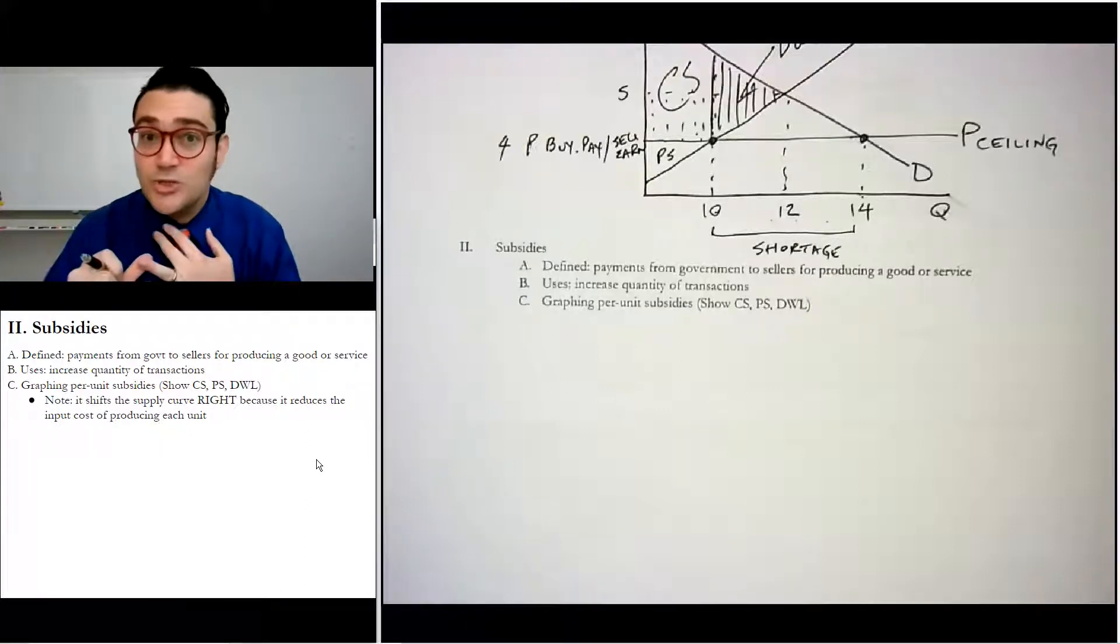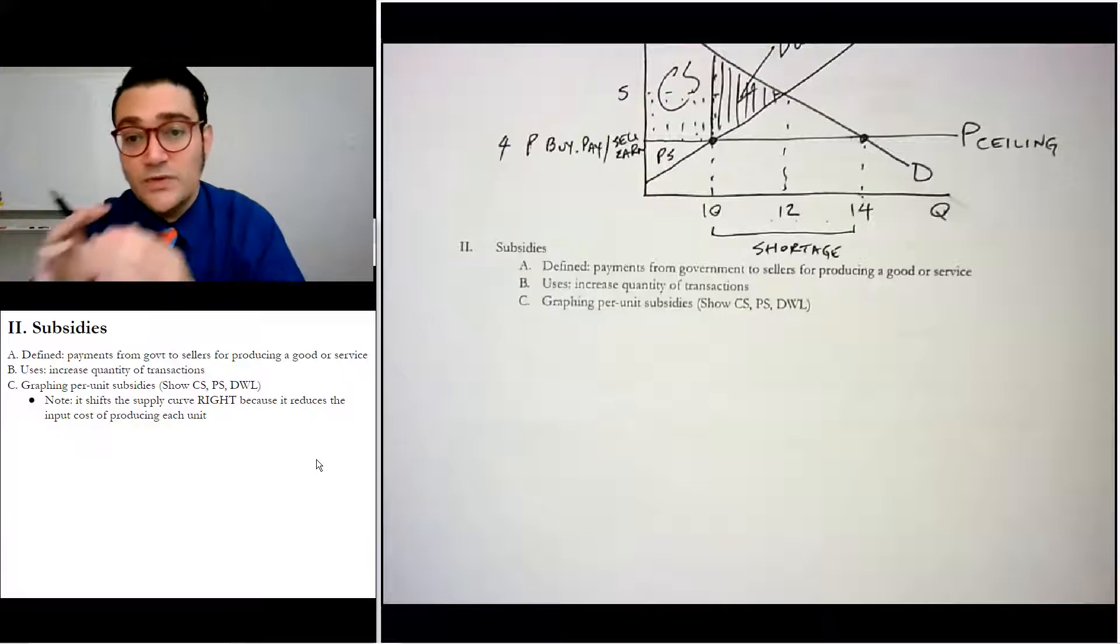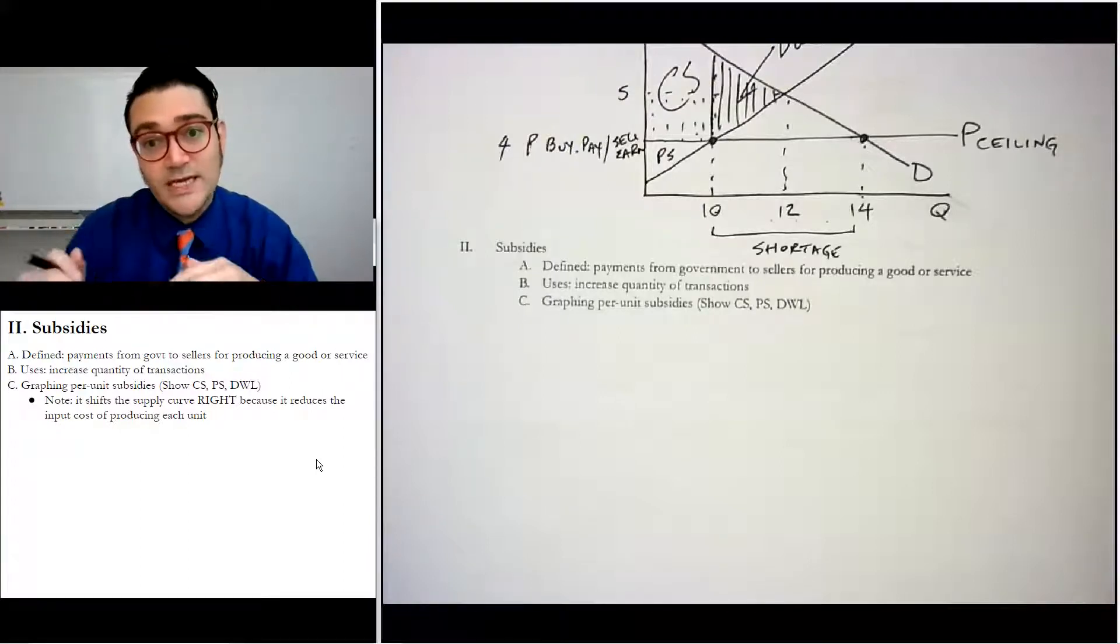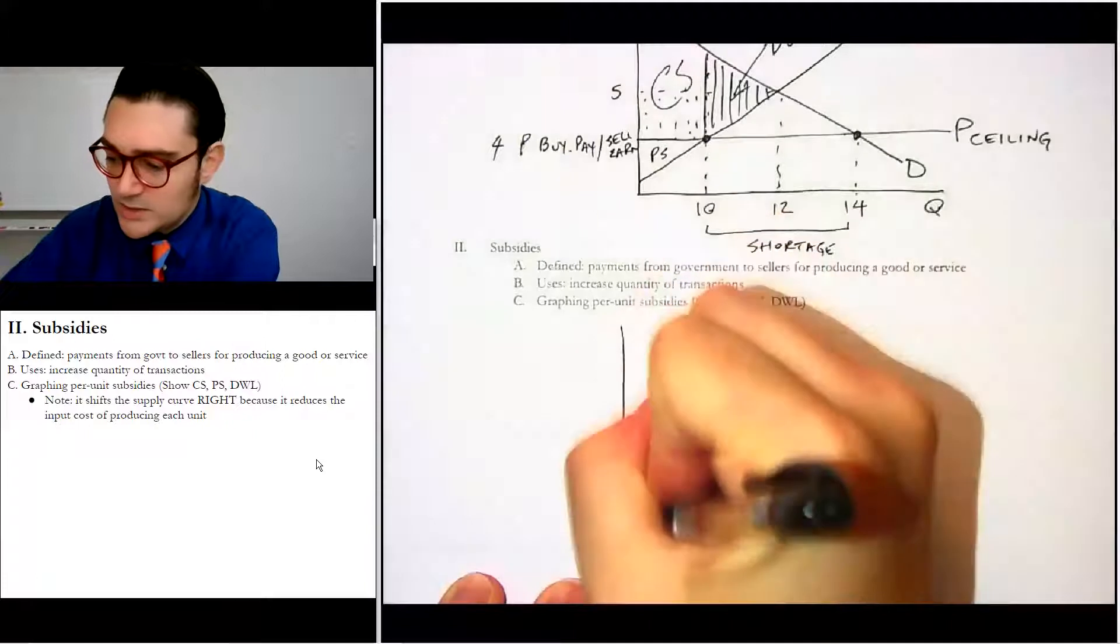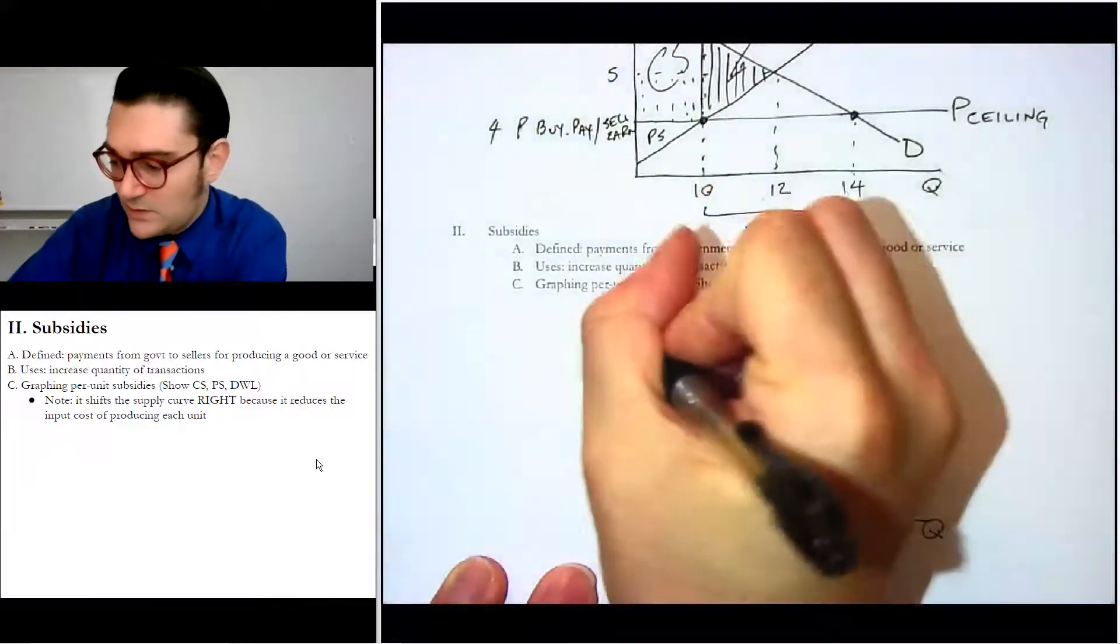We see them in college tuition where the government subsidizes the thing because they want to increase the quantity of the transactions. So they just reduce the cost and it moves that supply curve to the right or down is the other way to think about it because it's cutting the cost of producing. So let's go ahead and draw a big old supply and demand graph.